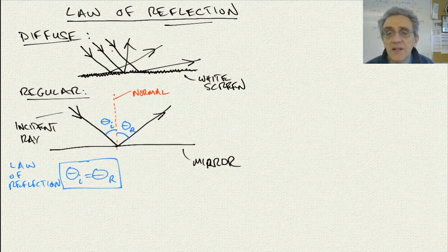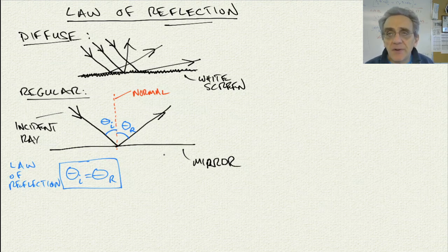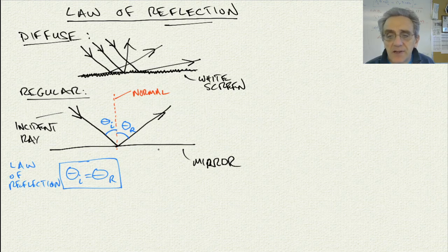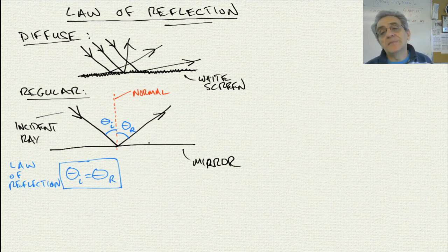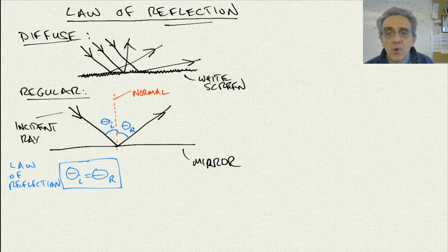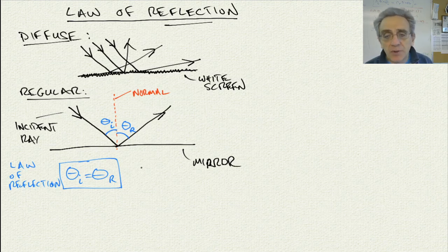There's a specific use case for that. You would never want to project a film onto a mirror, because then no one's going to be able to see it in the room — for that you'd need a white screen. But regular reflection has many important applications. Let's move on.